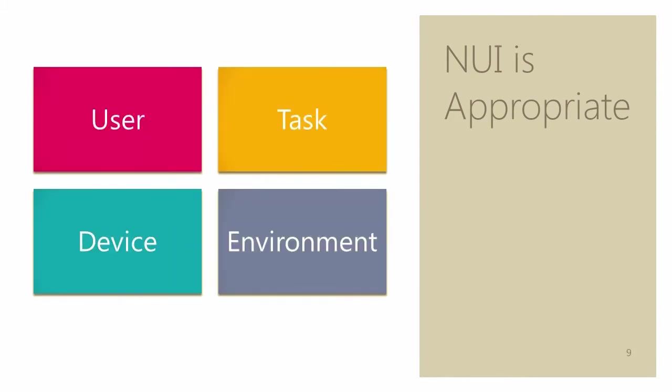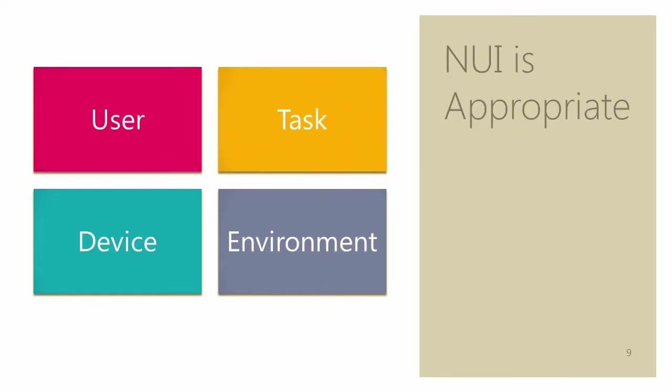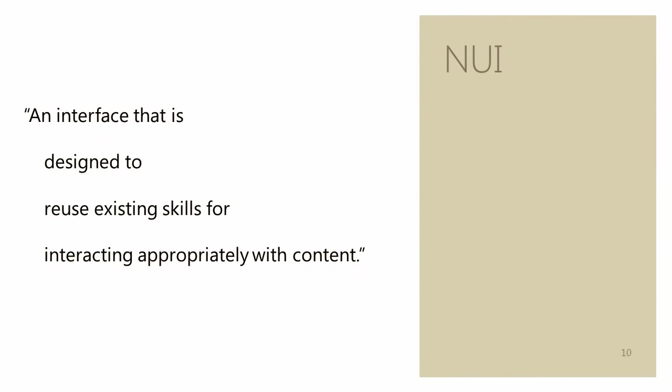We have to consider the user, task, device, and environment when creating a natural user interface. All of these things are important for creating the best interface for each user, whether it's the general public, a child, or a professional — each type of task, such as whether they're using content or interacting with their voice, and what types of devices you have, such as a tablet or a motion tracking sensor. When people ask me what a natural user interface is, this is the definition that I use.